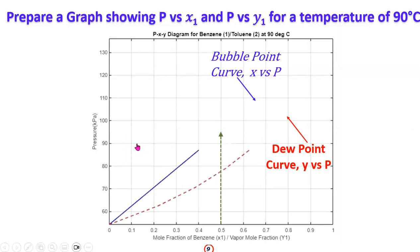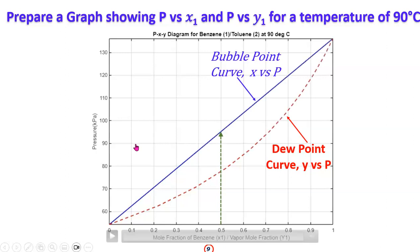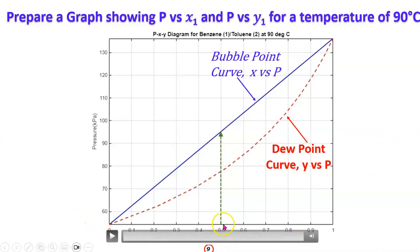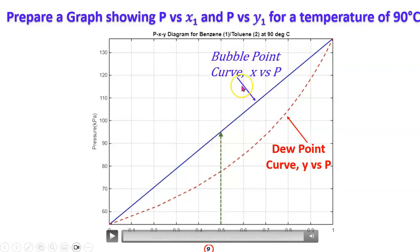We can now plot the P-X-Y diagram. The blue curve is the bubble point curve (X1 versus P), and the red curve is the dew point curve (Y1 versus P). The bubble point curve lies above the dew point curve.